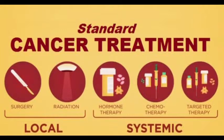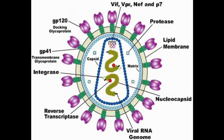Cancer treatment: surgery (removing the tumor), radiation therapy using cobalt-60 and iodine-131 (X-rays directed at the tumor's periphery to kill growth), and chemotherapy drugs like vincristine and taxol (obtained from Taxus). Most common treatments use all three methods combined. Immunotherapy includes monoclonal antibodies, and a cancer vaccine is also being developed.